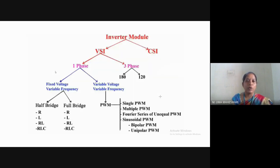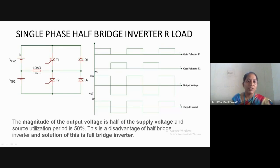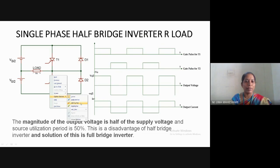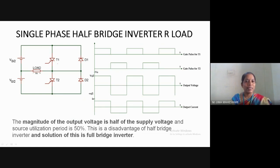This is the circuit diagram of the single phase half bridge inverter. The supply voltage is Vs/2 in the upper half and Vs/2 in the lower half. A resistive load is connected and the voltage across it is marked as V0, with positive and negative polarity. There are two thyristors T1 and T2, with feedback diodes D1 and D2 connected across them respectively.